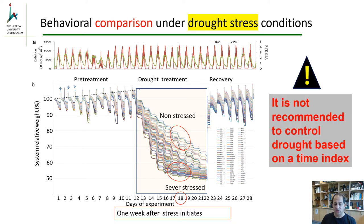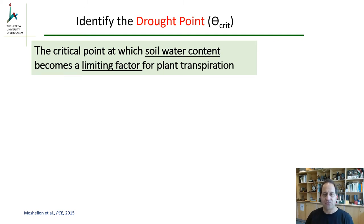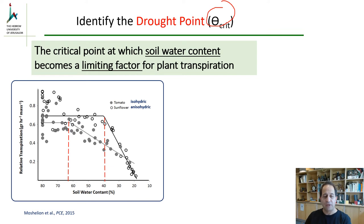So we can conclude that it is not recommended to compare the plants on a daily basis. So how do you know what is the exact stress level your plant suffers? To my opinion, plant stress response should not be determined by physical parameters like soil water content, but should be determined by physiological parameters like plant transpiration. For example, if we want to set up a drought experiment, we should know what is the drought point or the tethacrete, which is the physiological point below which plants are under stress. So if we look at this graph, when we measure plant transpiration and soil water content, the point where soil water content becomes a limiting factor for transpiration — this point here — this is the tethacrete.